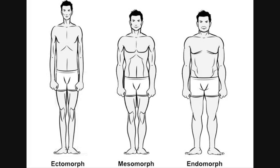Hi guys, today we're going to be talking about body types and how to identify which body type you are and the differences between them. So there are three different body types: the ectomorph, the mesomorph, and the endomorph. These are what the body types would look like before any type of weight training or fitness plan.